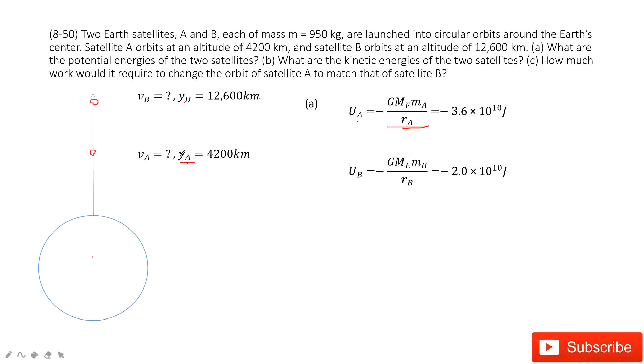I should write it rA, rB. And then you input the known quantities and get the final answer. Similarly, for the gravitational potential energy for B, you input the known quantities and get the answer.